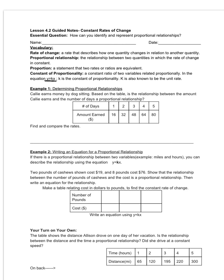So for example one, we're going to just determine if we have a proportional relationship or not. Callie earns money by dog sitting. Based on the table, is the relationship between the amount that Callie earns and the number of days a proportional relationship? So when we look here at the table, we see the number of days one through five.